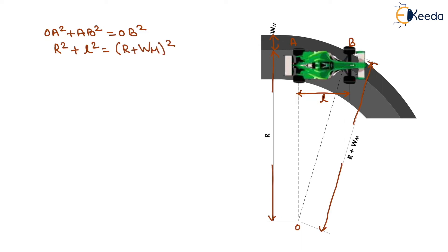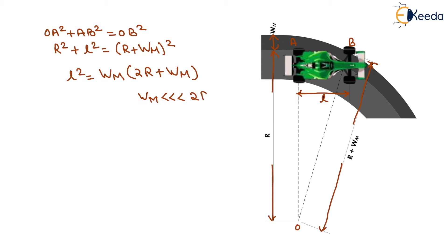On solving, we get L² = WM(2R + WM). Since WM is very small compared to the radius of the curve, we neglect WM in the bracket. So the equation becomes L² = WM × 2R. From this, mechanical widening WM = L² / 2R, and this is for the off-tracking condition for one lane only.